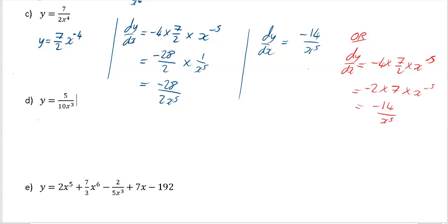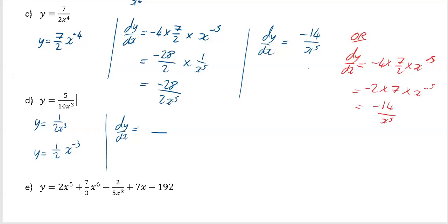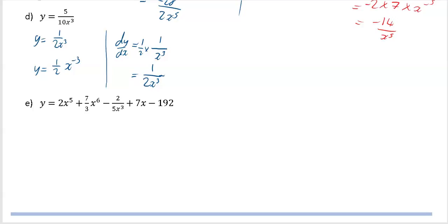In this question, the first thing to do is cancel down wherever you can — anything to make life easier. Top and bottom both divide by five, so it becomes one over two x cubed. We're not in index form yet, so that becomes a half times x to the minus three. Now, x to the minus three is one over x cubed, and with the half multiplying, that gives one on the top and two x cubed on the bottom — so the expression is one over two x cubed.